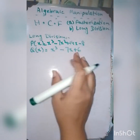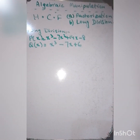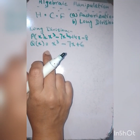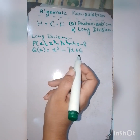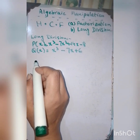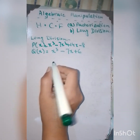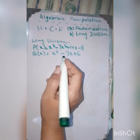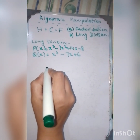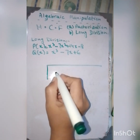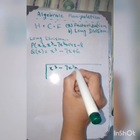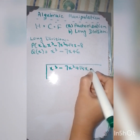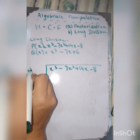Now applying the long division method. I have p(x) = x³ - 7x² + 14x - 8 and q(x) = x³ - 7x + 6. I will write p(x) inside the division bracket as the dividend and q(x) as the divisor.